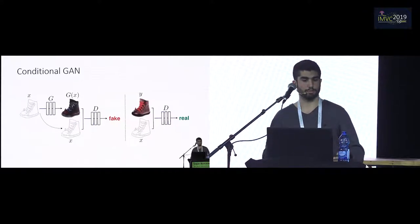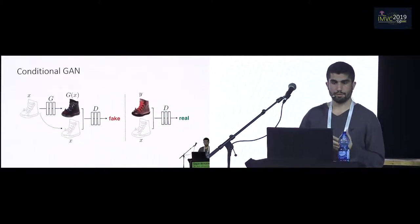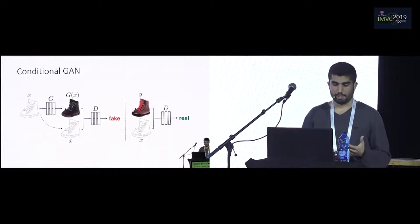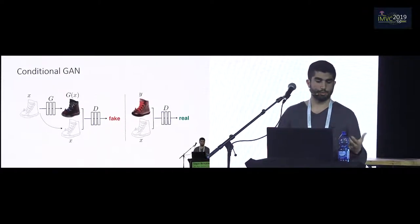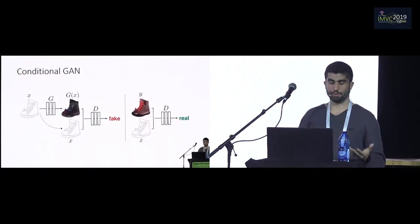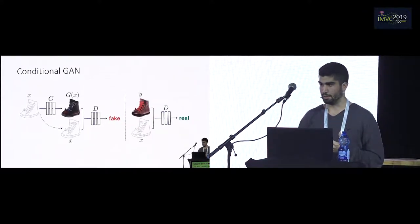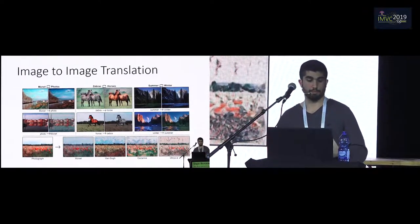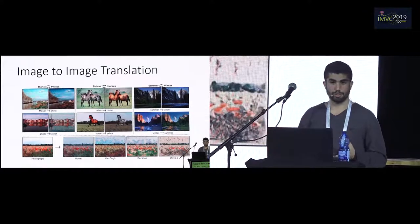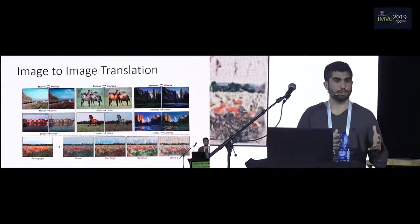An important extension of GANs is the conditional GAN. Instead of giving some random vector Z, we can give as input some image X. In this example, we have an image of an edge, and we want to produce a realistic-looking shoe that matches that edge. The generator takes the edge image and produces a shoe, and the discriminator tries to distinguish between a real shoe and one generated by the generator, and is additionally given the conditional image it started with. This leads to the main topic: image-to-image translation, and all the methods discussed use this conditional GAN framework.